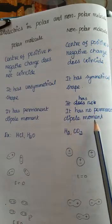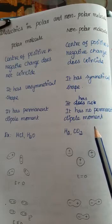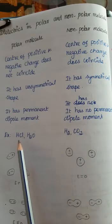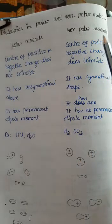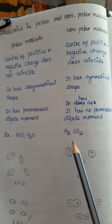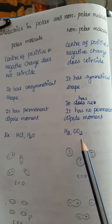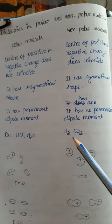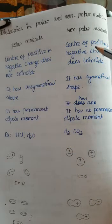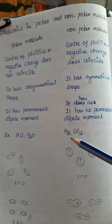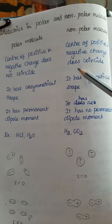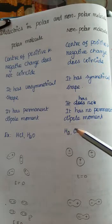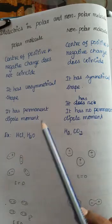Non-polar molecules have no permanent dipole moment due to their symmetrical shape. Good examples of polar molecules are HCl and H2O — hydrochloric acid and water. Good examples of non-polar molecules are hydrogen and carbon dioxide. In hydrogen and carbon dioxide, the center of positive and negative charges does coincide.